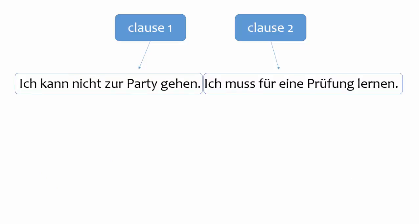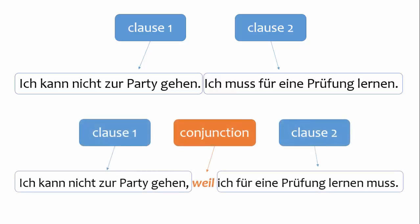The same is true in German. At the top of your screen, you see two independent clauses. You can add a conjunction to link these two clauses. The conjunction shows the relationship between the first clause and the second clause.